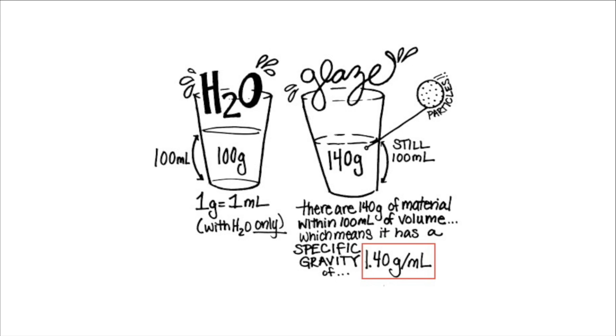Let's start by talking about what specific gravity is. The specific gravity of a glaze, or any substance, is the ratio of that substance's density, or particles per unit, to the density of a standard substance. In this case, we use water because as a standard liquid, it works out that 1 gram of water is also 1 milliliter.